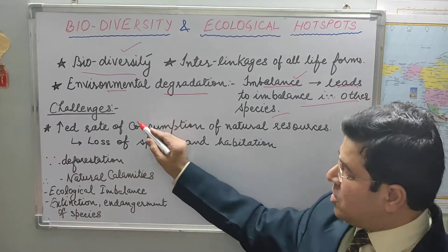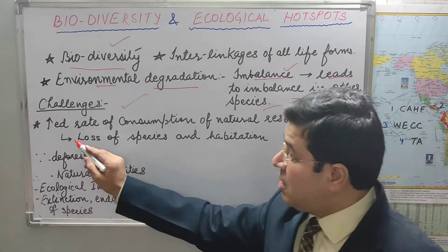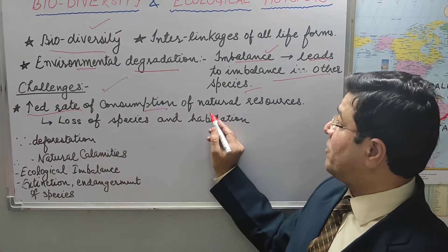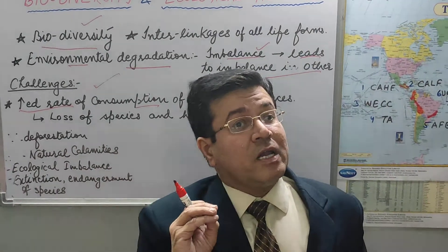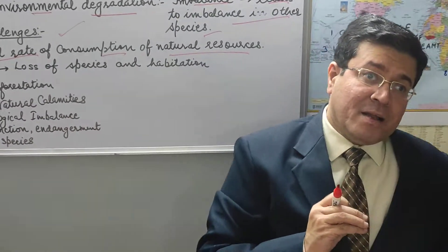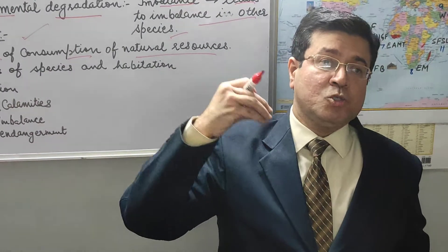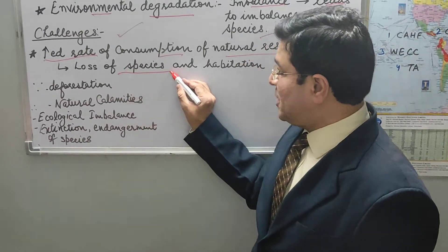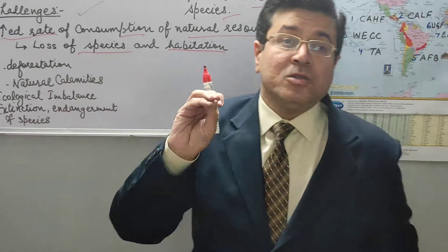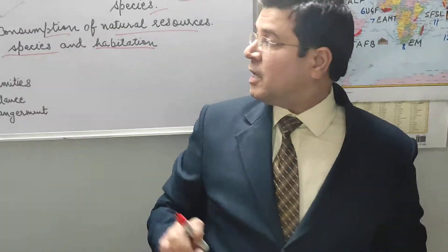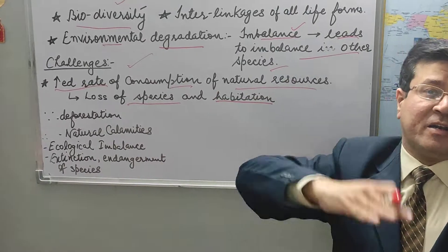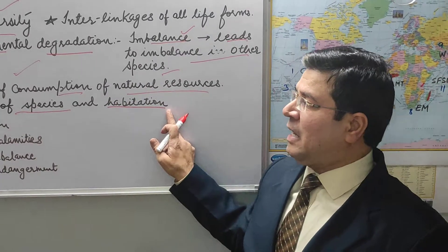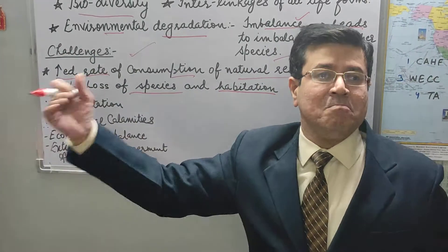So we have discussed the challenges. Why are we observing these challenges? Because we have a very high, rapid rate of consumption of natural resources. We are consuming forests at a very rapid rate, and many other natural resources we are consuming at a rapid rate. That is why we are observing these problems. We are losing species and their habitation — their natural environment also we are losing. This is a cause and effect relationship: because we are losing their natural habitat, we are losing more and more species on a daily basis.